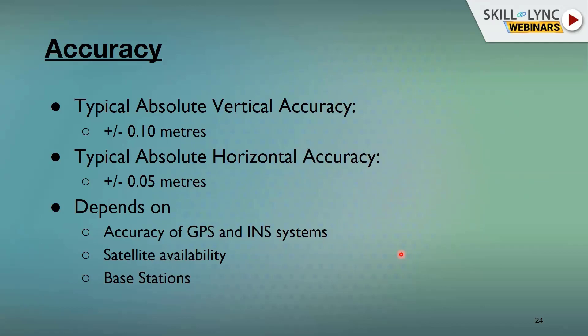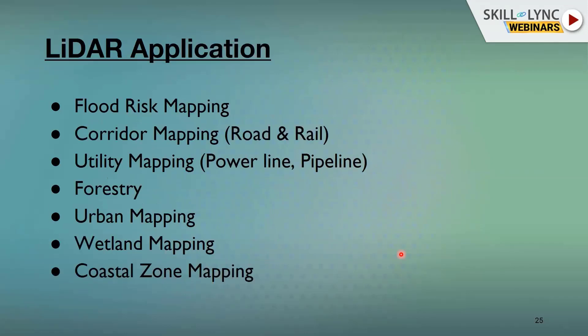People prefer LiDAR technologies especially for EPC industries like transmission line projects, railway projects, and road projects. The applications include flood risk mapping, corridor mapping, road and rail and utility mapping like power lines and pipelines, as well as forestry, urban, wetland, and coastal zone mapping.